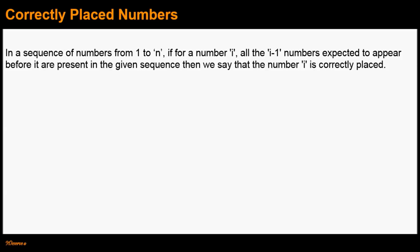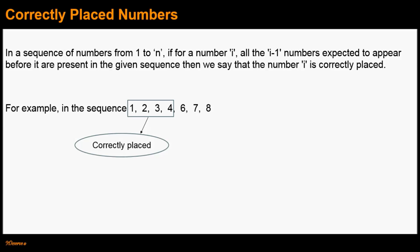This definition sounds a bit long, but it's not complicated. Let's understand it using an example. In the sequence 1, 2, 3, 4, 6, 7, 8, numbers 1, 2, 3, 4 are correctly placed. That is because there are 3 numbers expected to appear before number 4 and there are 3 numbers present. Similarly, for number 3, there are 2 numbers expected to appear before it and they are present in the sequence.